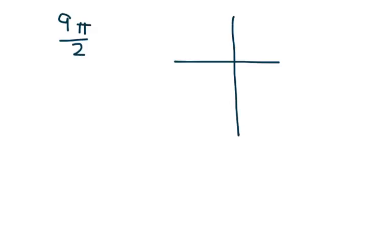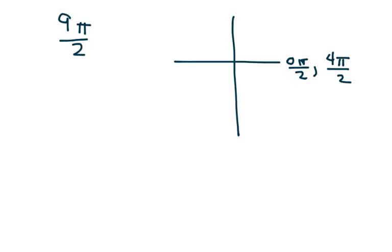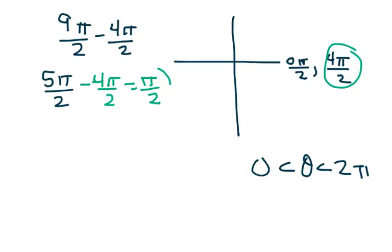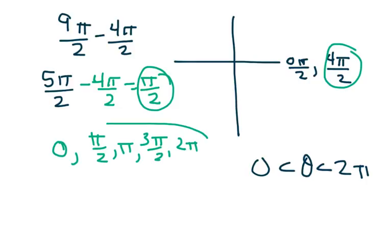The next example is 9 pi over 2. I know that 2 pi equals 4 pi over 2, so this is not between 0 and 2 pi. I subtract 4 pi over 2 to get a coterminal angle: 9 pi over 2 minus 4 pi over 2 gives 5 pi over 2. That's still bigger than 4 pi over 2, so I subtract again: 5 pi over 2 minus 4 pi over 2 gives pi over 2. That's a quadrantal angle — quadrantals are 0, pi over 2, pi, 3 pi over 2, and 2 pi — so the reference angle for 9 pi over 2 does not exist.